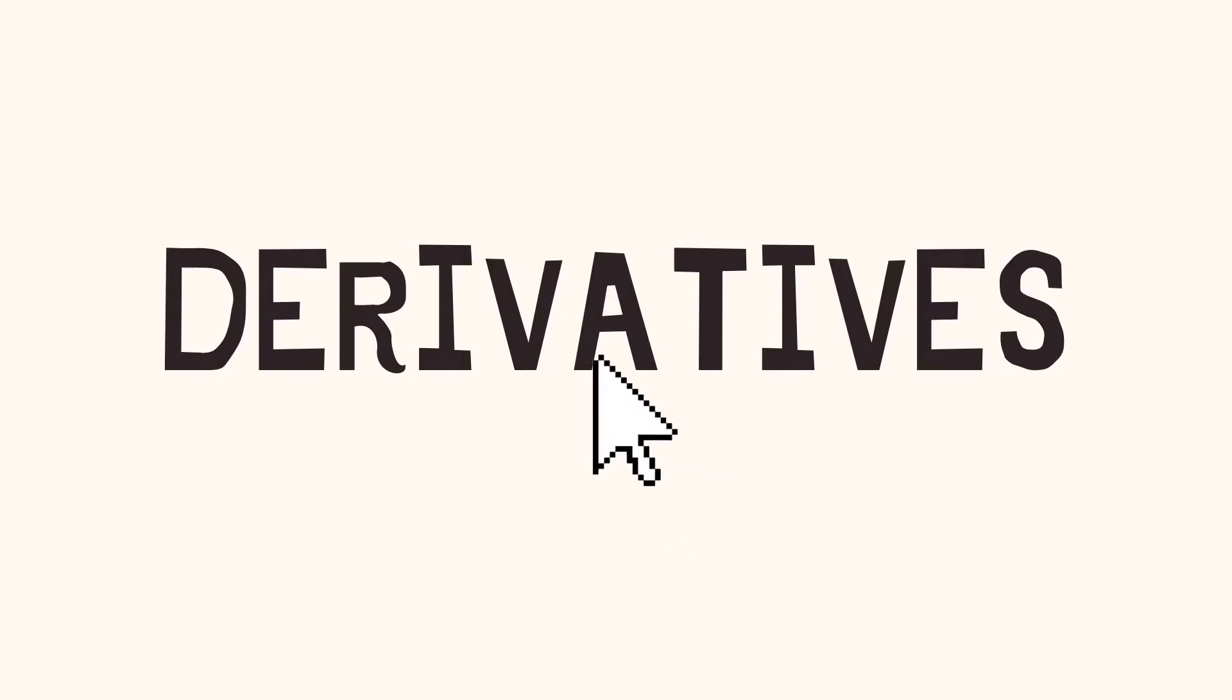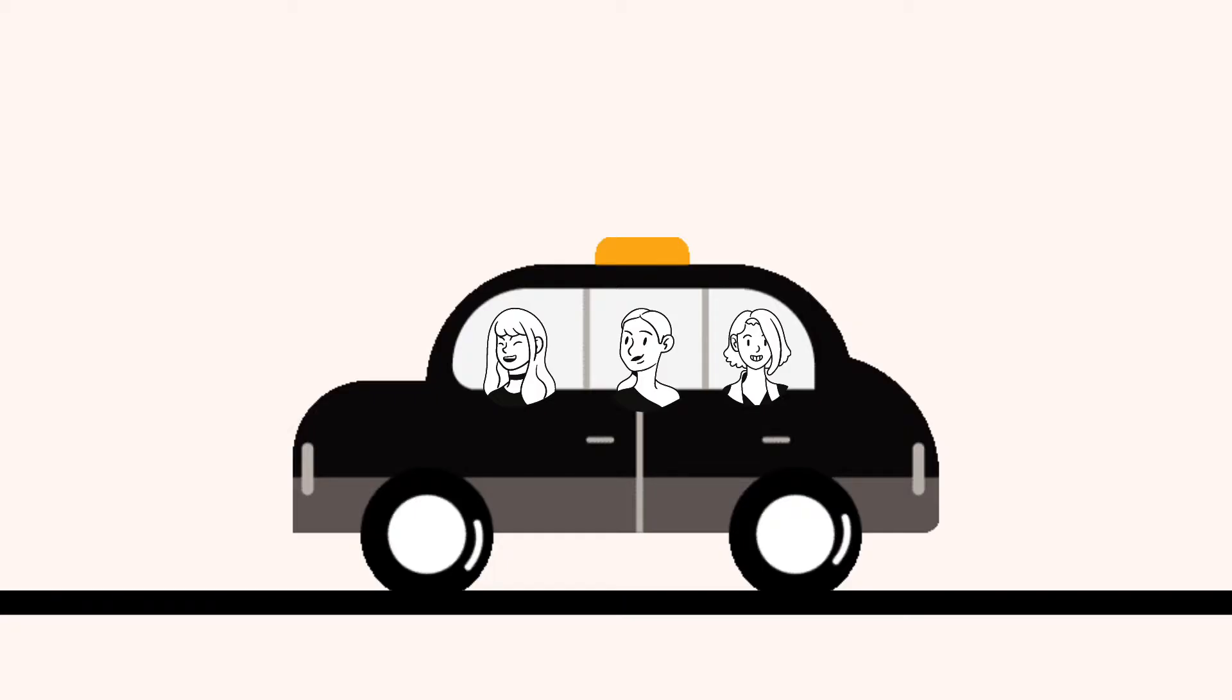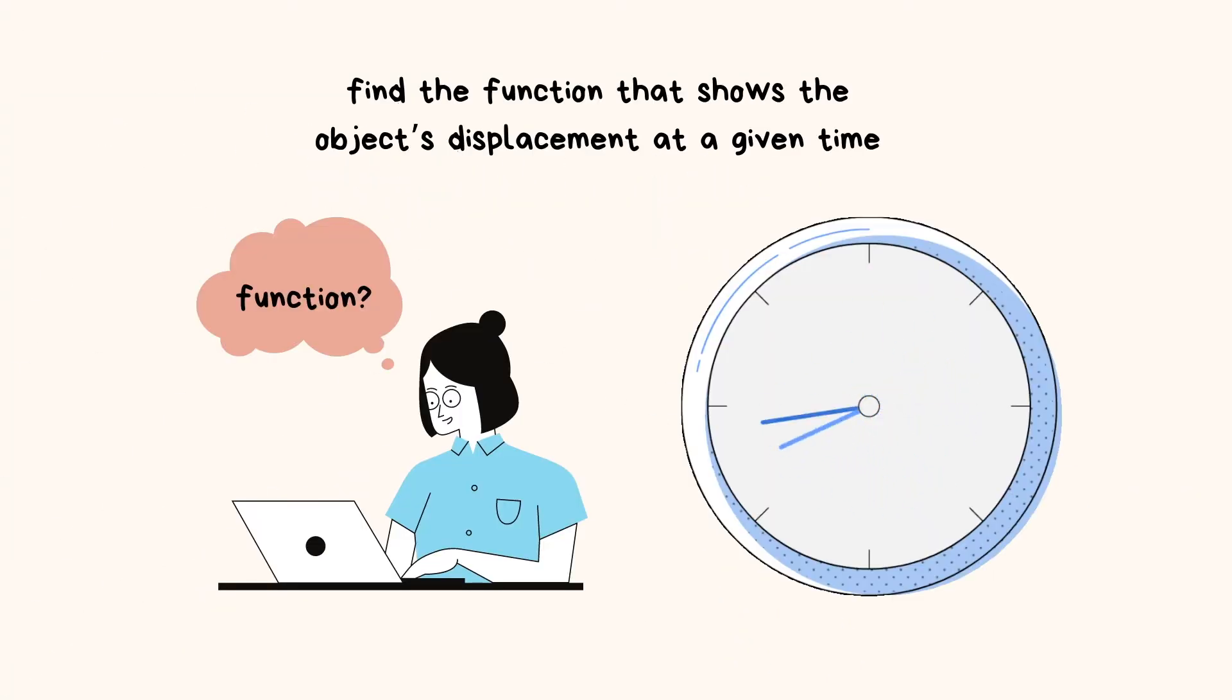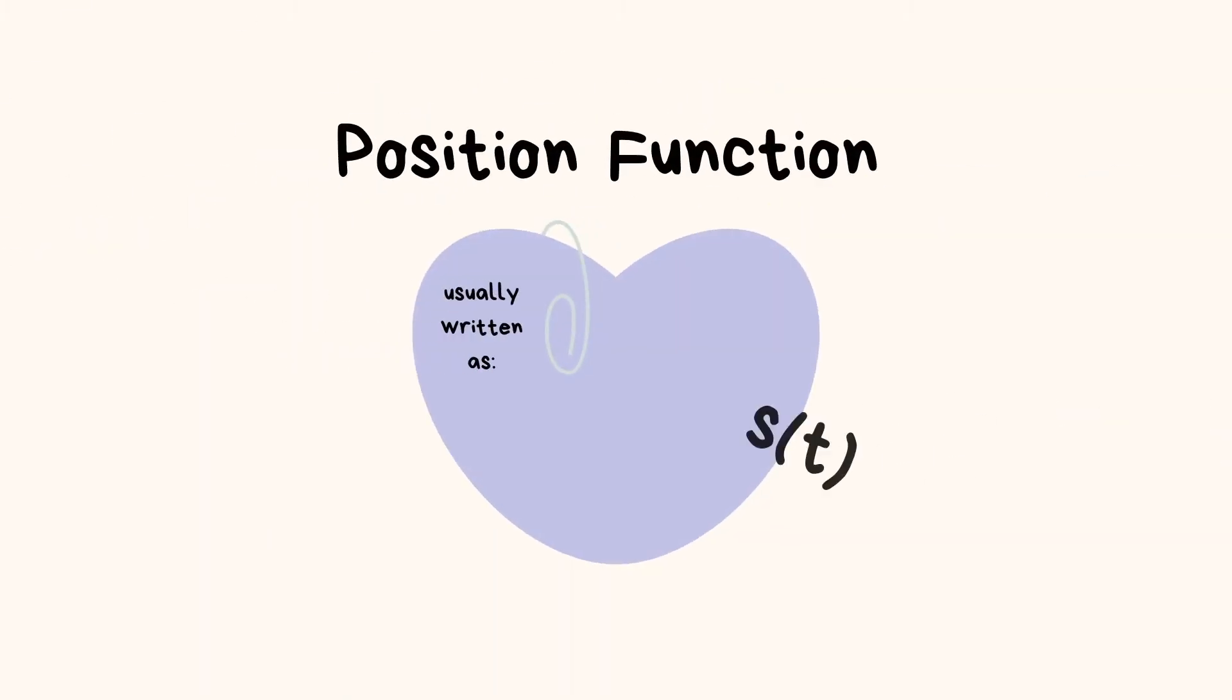So basically, we'll be using derivatives to find the velocity and acceleration. So how exactly do we use derivatives to calculate velocity and acceleration? To find both velocity and acceleration, we first need to find the function that shows the object's displacement at a given time, or what we usually call the position function.